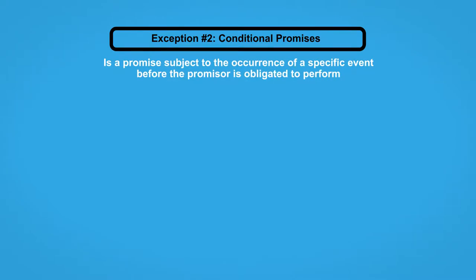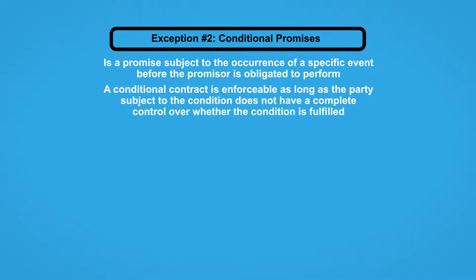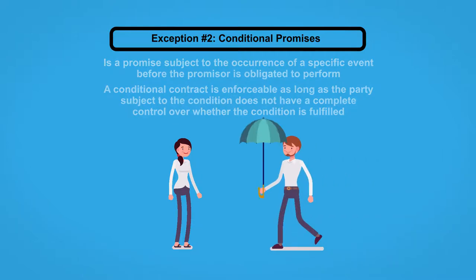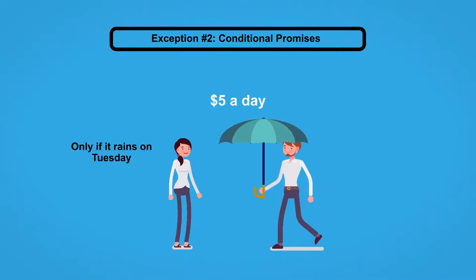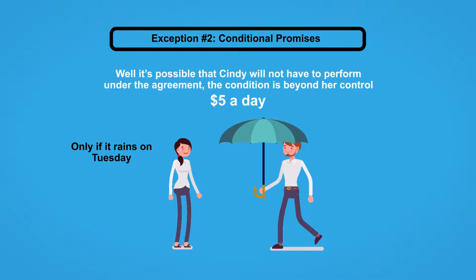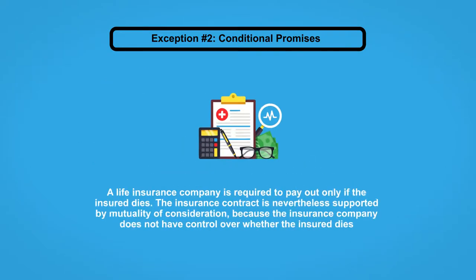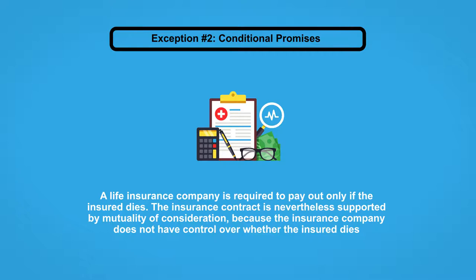Exception number two: conditional promises. A conditional promise is a promise subject to the occurrence of a specific event before the promiser is obligated to perform. A conditional contract is enforceable as long as the party subject to the condition does not have complete control over whether the condition is fulfilled. For example, if Cindy agrees to give Bobby an umbrella only if it rains on Tuesday, in exchange for five dollars a day, this agreement is enforceable — the condition is beyond her control.